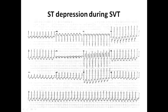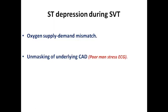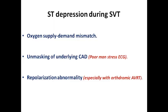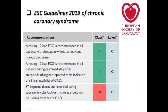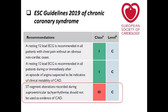We start with a quick review of ST depression, which we discussed in a separate lecture. ST depression is one of the very common features seen in SVT. It may be caused by oxygen supply and demand mismatch, by unmasking of an underlying coronary artery disease — previously called 'poor man's stress ECG' — or it may be repolarization abnormalities, very common with orthodromic AVRT. The ESC guidelines on chronic coronary syndrome (2019) state that ST depression recorded during SVT should not be used as evidence of coronary artery disease.